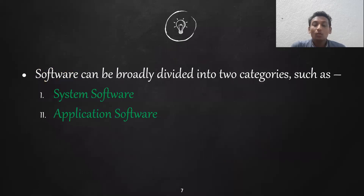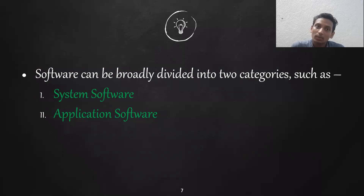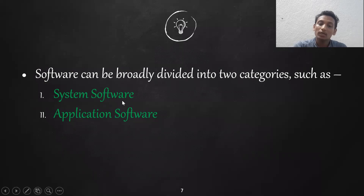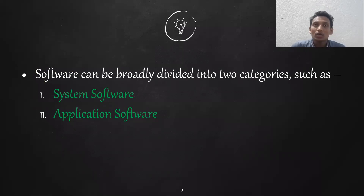Software is mainly divided into two types: system software and application software. This chapter — the hardware concept chapter — covers different types of hardware devices and software concepts in detail.